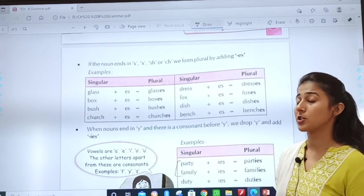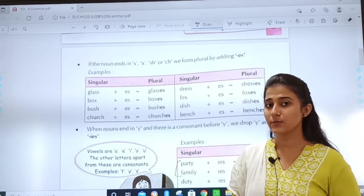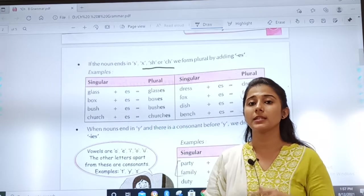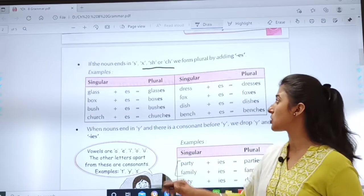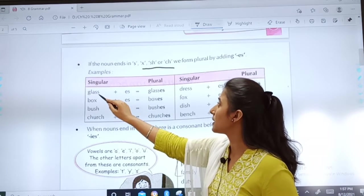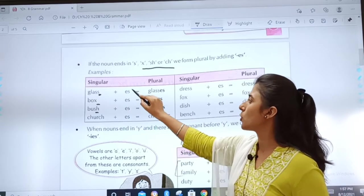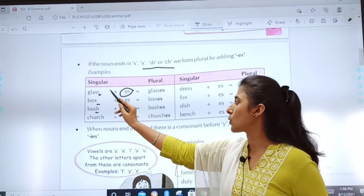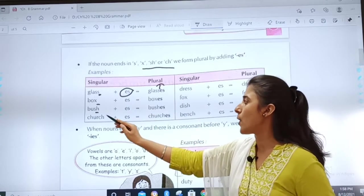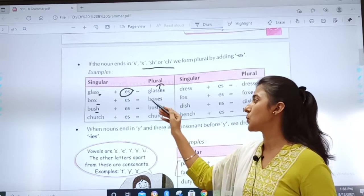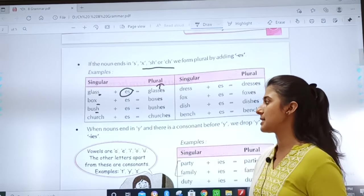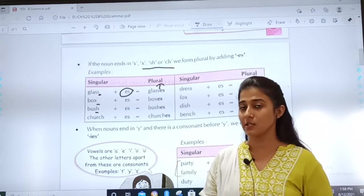Then, what the second box tells us about? If the nouns ends with S, X, CH, or SH. If the nouns end with S, X, CH, or SH. We form plural by adding ES. Okay? When you see the noun is ending with S, X, SH. So, you have to add ES. Clear? So, glass, you will add ES. So, it will turn into glasses. And this will become plural. Box will turn into boxes. Bush will change into bushes. What we are doing? We are making singular noun or plural by adding ES. Church will become churches. Okay?